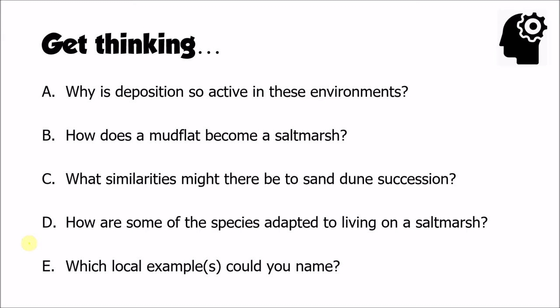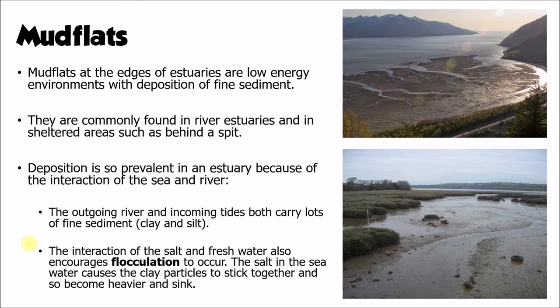We're going to start by thinking about the process that creates salt marshes, and we'll also draw some similarities with sand dune succession that we've looked at already. The first thing that happens in the formation of a salt marsh is that we need an intertidal mudflat to develop. These tend to develop on the edge of estuaries, where a river meets the sea, and we get a collection of very fine clay and mud sediment built up on the edge of that estuary.